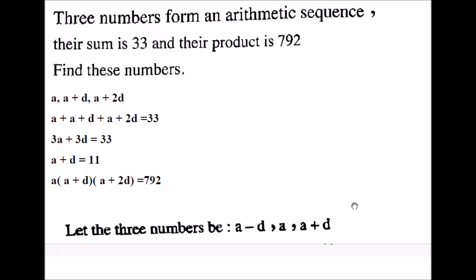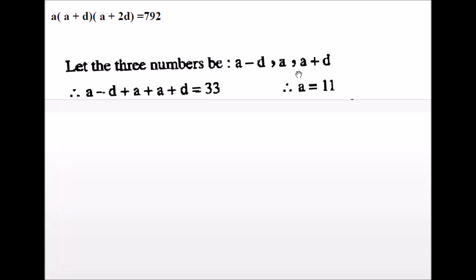But there is an easier way to solve this problem. If given the sum of three numbers in an arithmetic sequence, it's better to assume the three numbers to be A minus D, A, and A plus D. Because when you add the three numbers, the D will be cancelled and this will give an equation in A in one step. The sum of the three numbers is 33. So A minus D plus A plus A plus D equals 33. Negative D and D cancel each other. Then 3A equals 33. Therefore A equals 11.